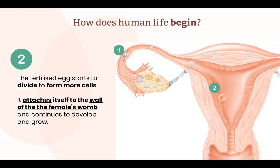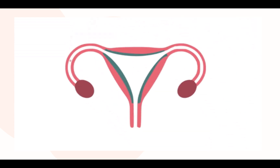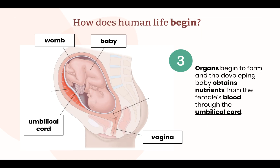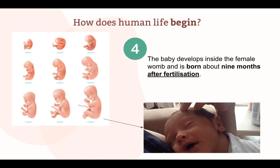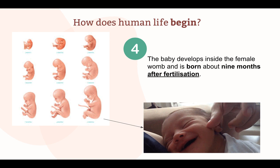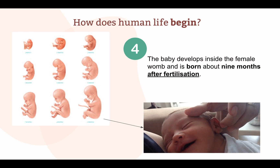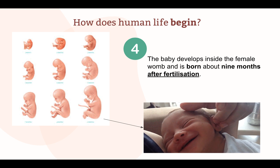Here's a quick animation to summarize the first two steps: fertilization, followed by the attachment of the fertilized egg. Organs begin to form and the developing baby obtains nutrients from the female's blood through the umbilical cord. The baby develops inside the female womb and is born about nine months after fertilization.